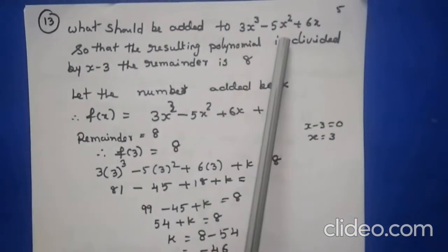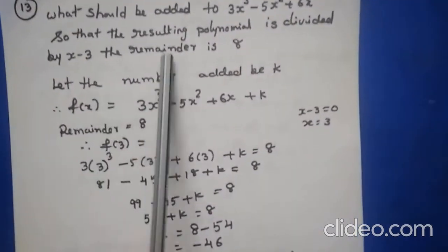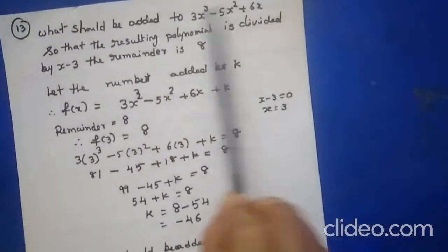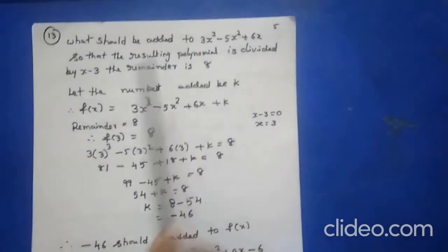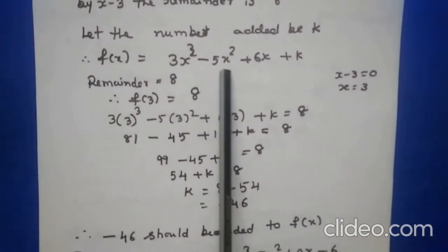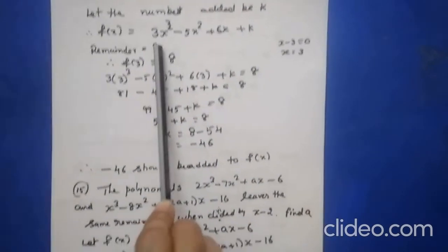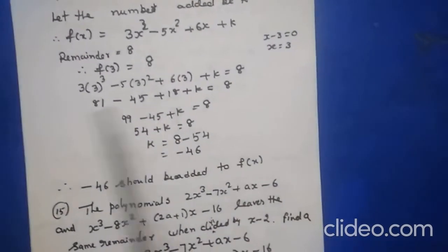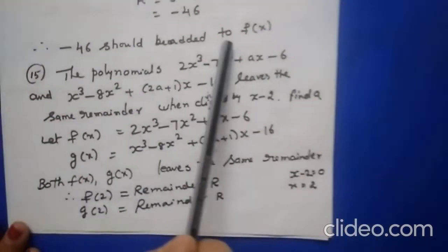New question type: What should be added to 3x³ - 5x² + 6x so that the resulting polynomial is divided by x - 3 with remainder 8? Let k be the number added, so f(x) = 3x³ - 5x² + 6x + k. Then x - 3 = 0, x = 3 and f(3) = 8. Substituting and solving, you get k = -46. Therefore -46 should be added to f(x).